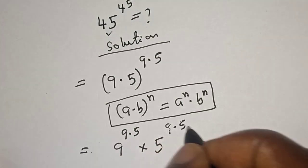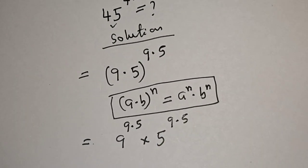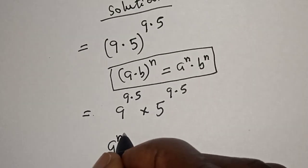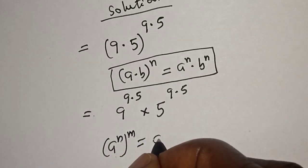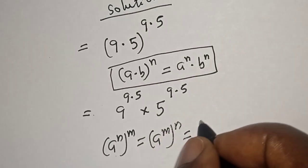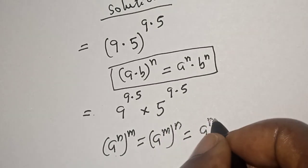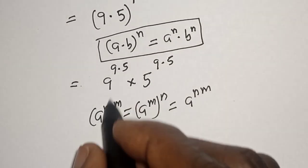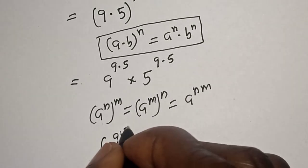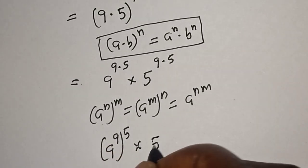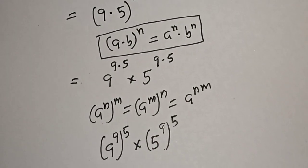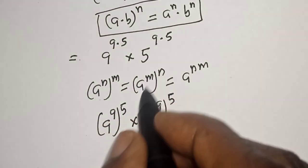Then this is equal to 9 raised to power 9 multiplied by 5, times 5 raised to power 9 multiplied by 5. Also take note of this rule: if you have a raised to power n, to the power of m, this is equal to a raised to power n times m.